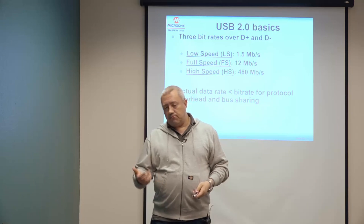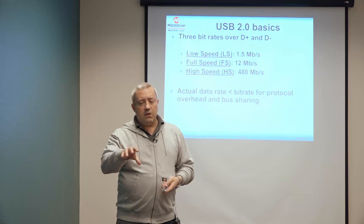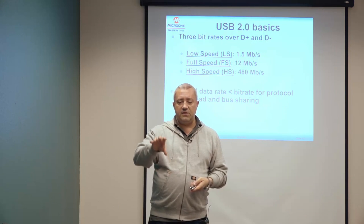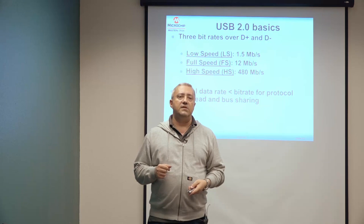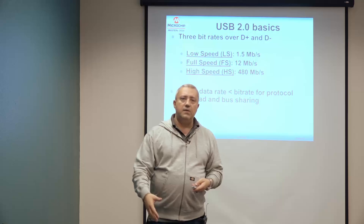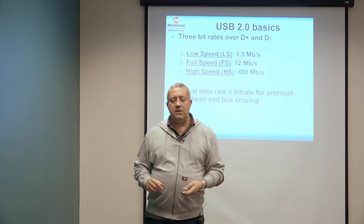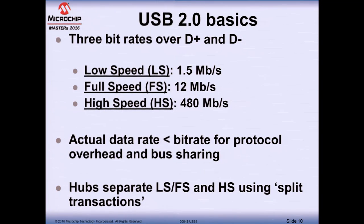Between Low Speed and High Speed there's quite a difference in speed. So if I have a High Speed bus and plug in a Full Speed device, does the Full Speed device bring down the speed of the entire bus? That doesn't happen because of a hub capability called split transactions. The communication between the Full Speed device and the hub is at Full Speed, but the communication between the hub and the host remains High Speed — so no concern about bringing down the speed of the entire bus.